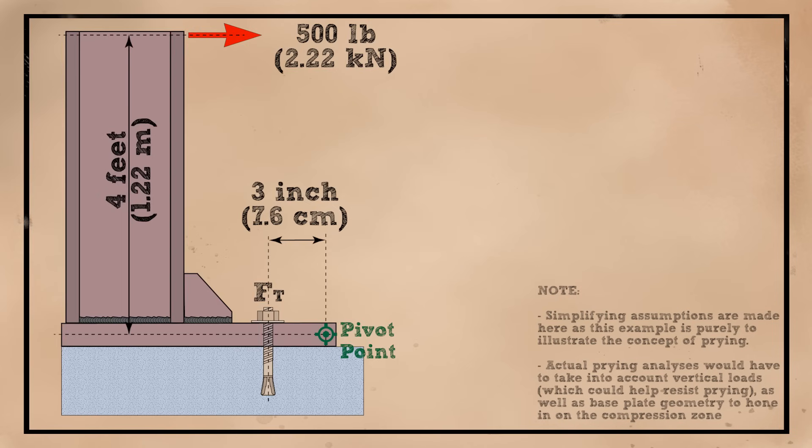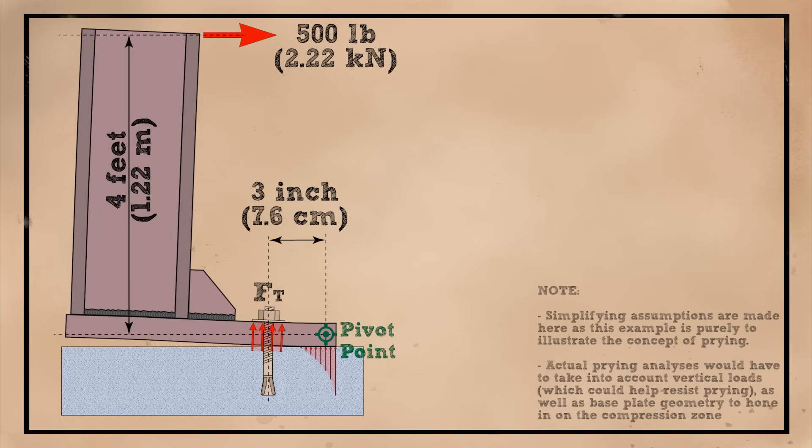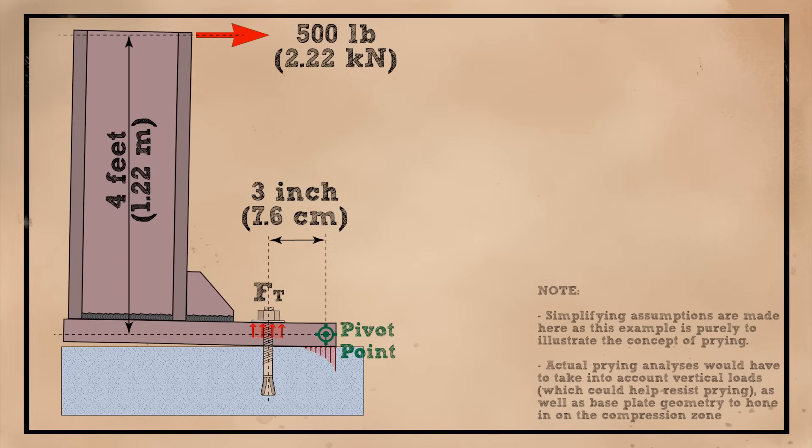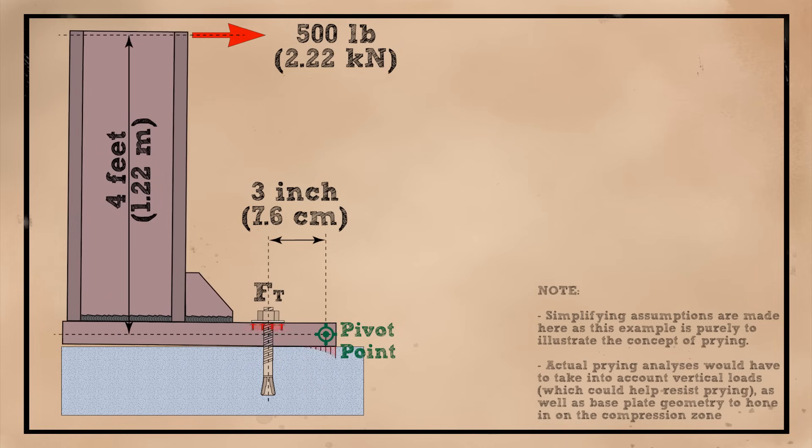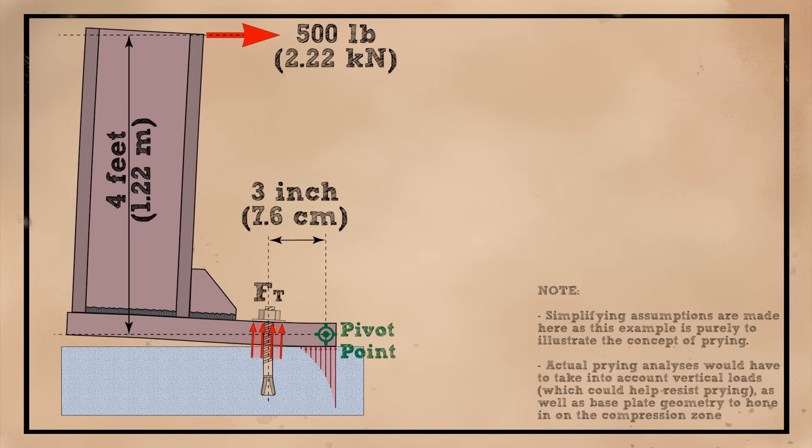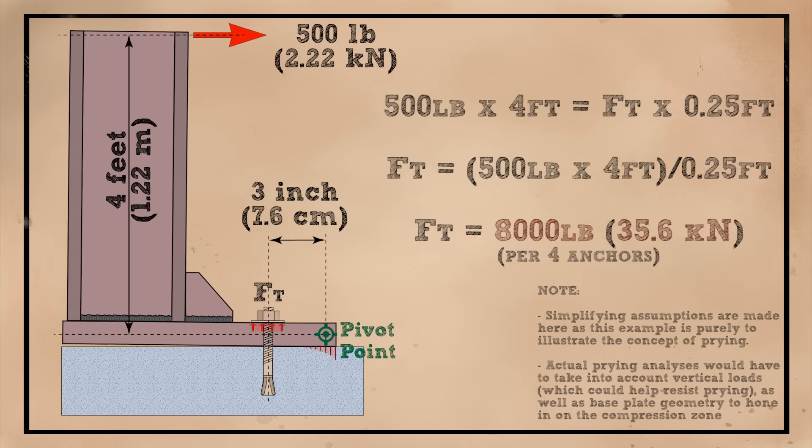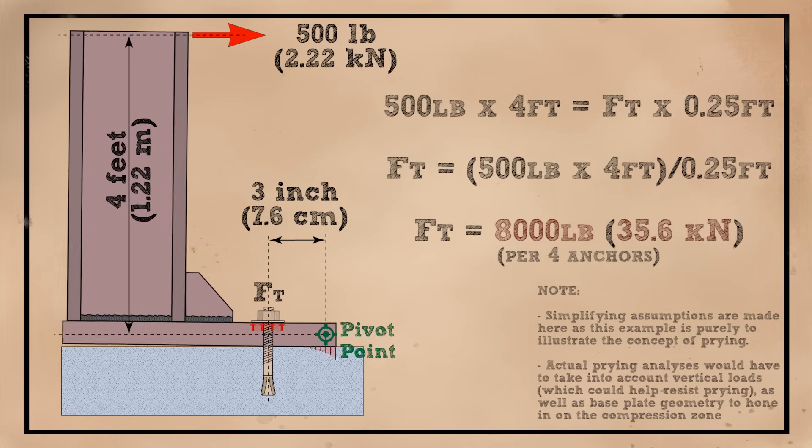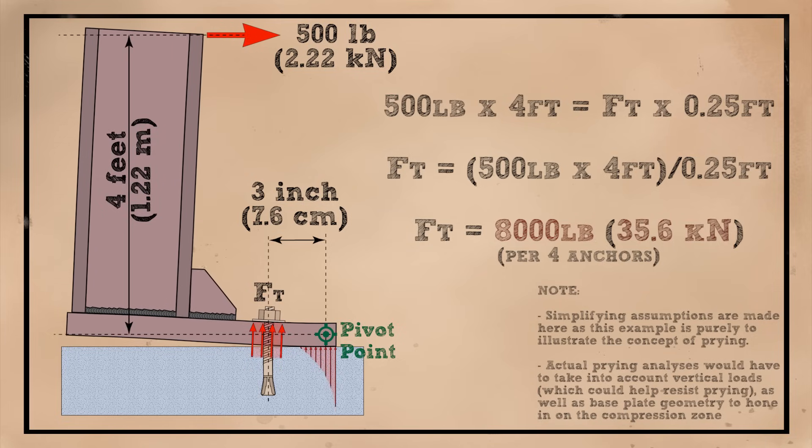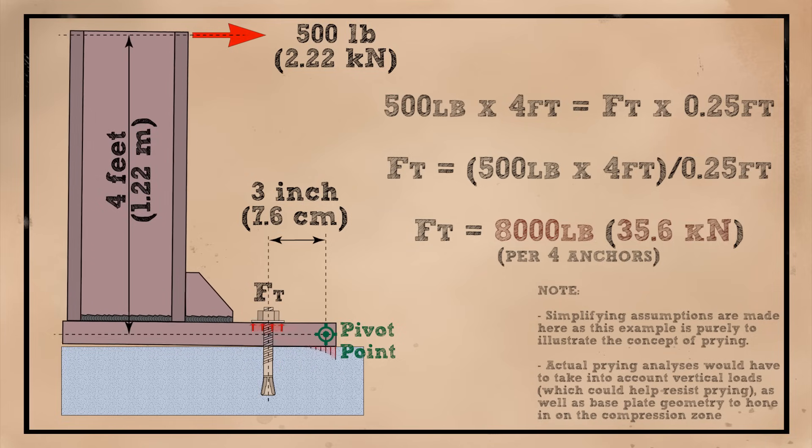Now, what if the design is revised to give additional clearance on one side of the post? Say, the base plate is shortened and all of the anchors are moved to the other side of the post. The prying distance is now just 3 inches or 0.25 feet. That means that the load on the anchor will now be 500 pounds times 4 feet divided by 0.25 feet. This is 8,000 pounds. So prying has now amplified our forces by a factor of 16.